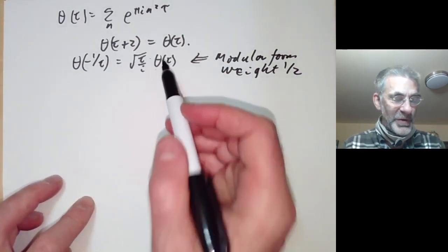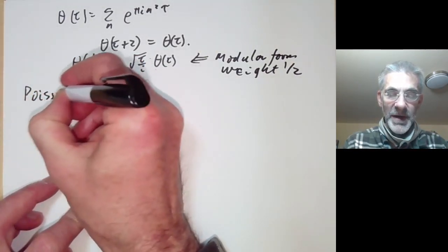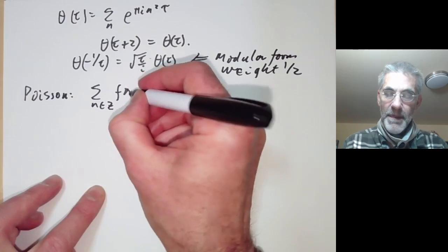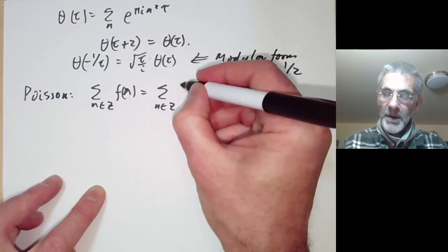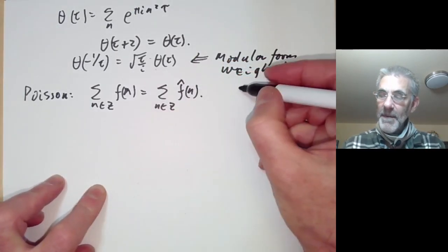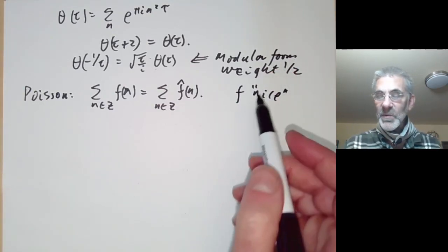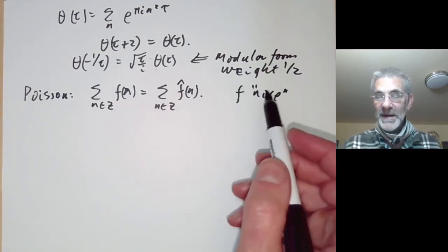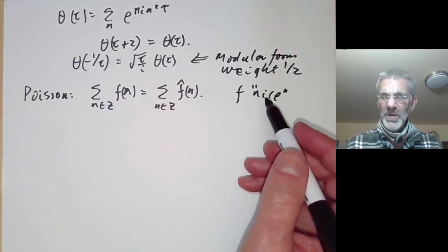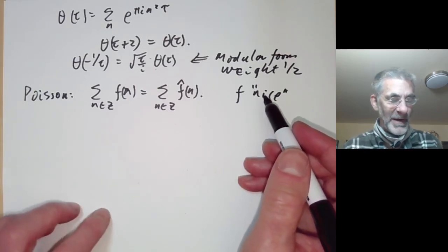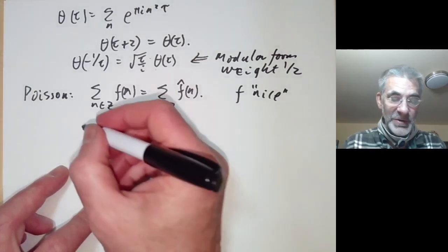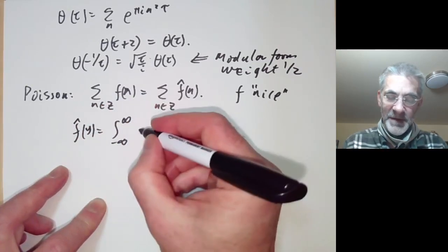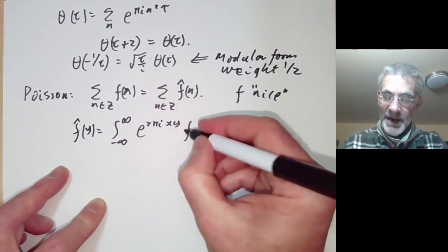This is actually quite easy to prove. We recall the Poisson summation formula, which says that if you sum some function over the integers it equals the sum over the integers of its Fourier transform, for some suitably nice function f. The Fourier transform of f is defined by f-hat of y equals the integral from minus infinity to infinity of e to the 2 pi i xy times f of x dx.